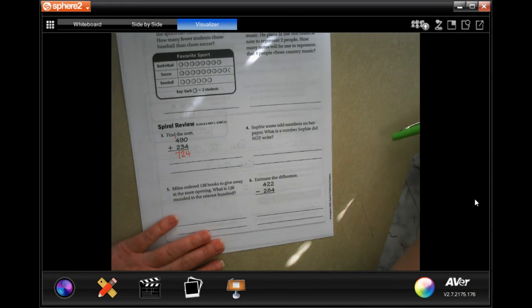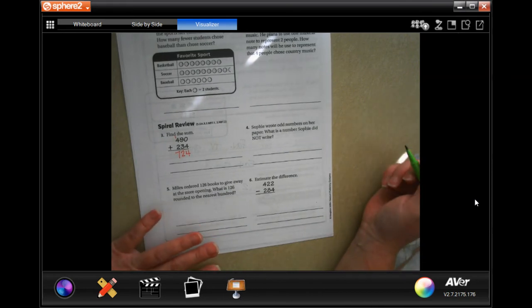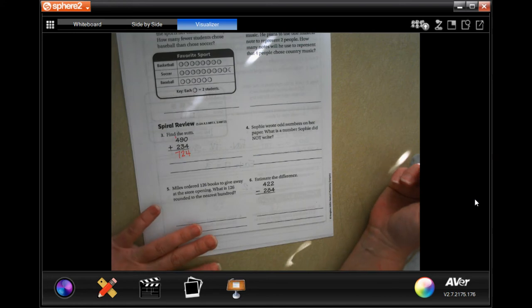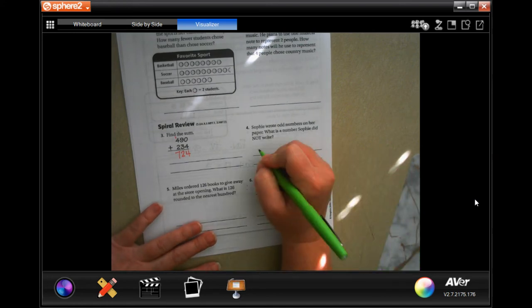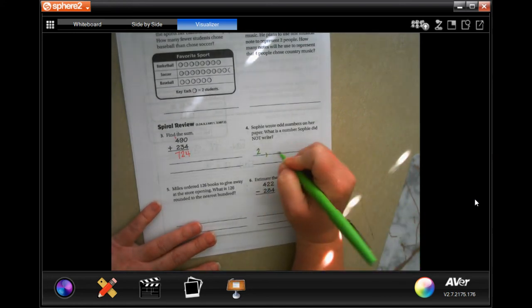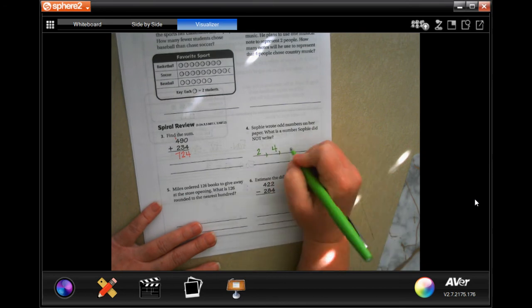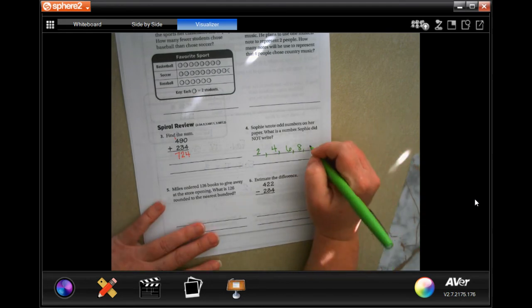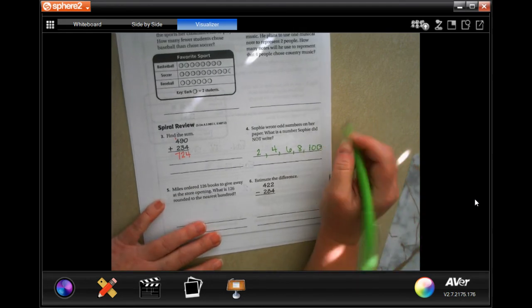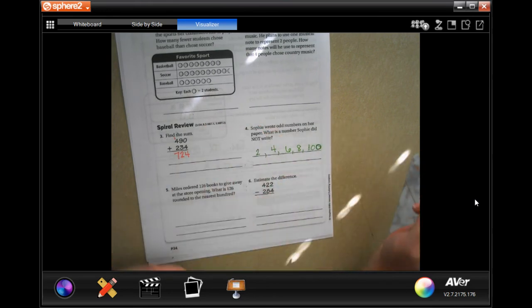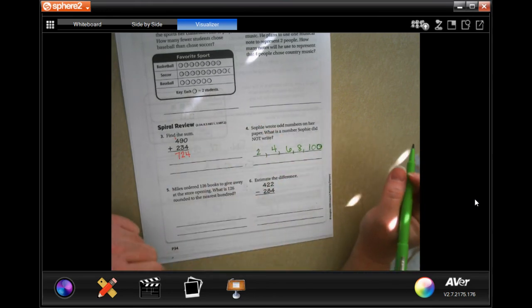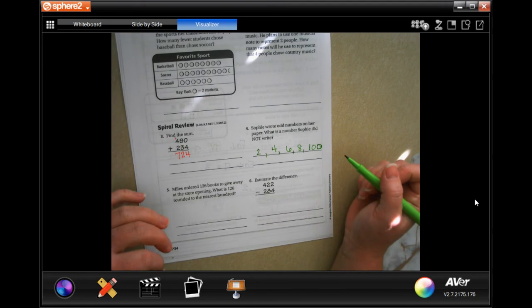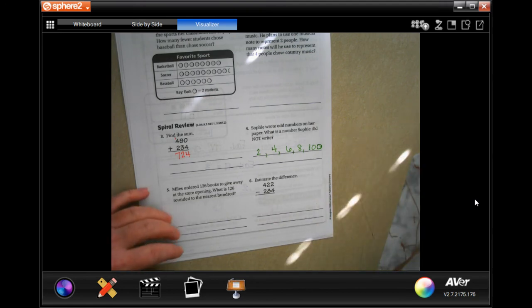Sophie wrote an odd number on her paper. What is the number that Sophie did not write? Well, she could have written two. That's not odd. She could have written four. That's not odd. She could have written six. That's not odd. She could have written eight. She could have written any even number. It doesn't have to be one of mine. It could be one of yours. Just make sure it's an even number.